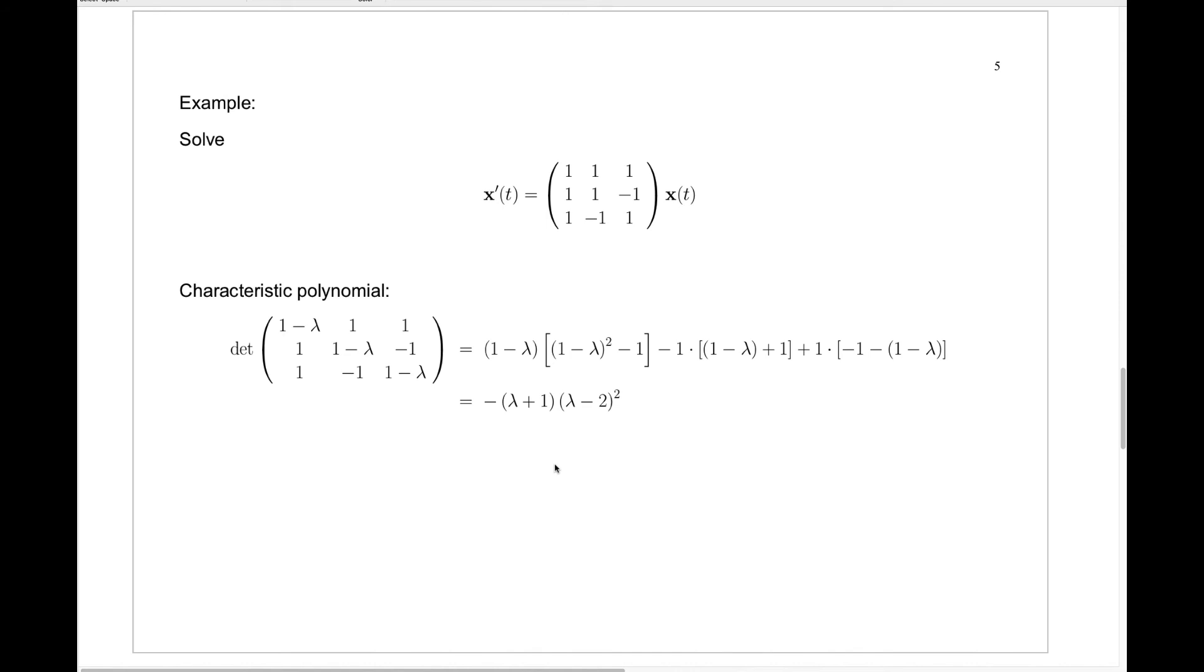Now let's look at a slightly more complicated example. Here we have a three by three system, meaning we have a system of three linear differential equations in three unknowns. What does this look like? Well, x prime of t is this matrix times x of t.